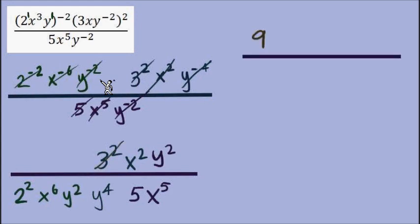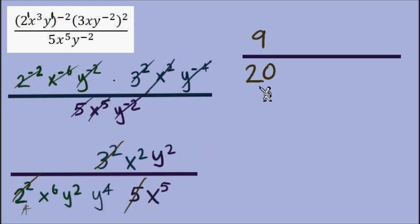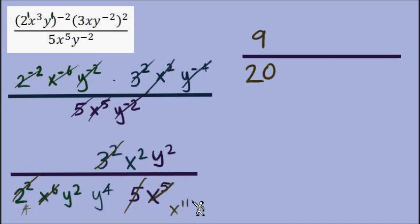My next step: I open a blank fraction and begin to evaluate these numbers. 3 to the power of 2 is 9, kept up in the numerator. 2 to the power of 2 is 4, and we also have a 5 — I need to do that multiplication: 4 times 5 is 20, and since those factors are in the denominator, that 20 goes in the denominator. Next, combining the variables: x squared on top, and in the denominator x to the 6th and x to the 5th — that's x to the 11th total. x squared over x to the 11th means we subtract, giving x to the 9th in the denominator.